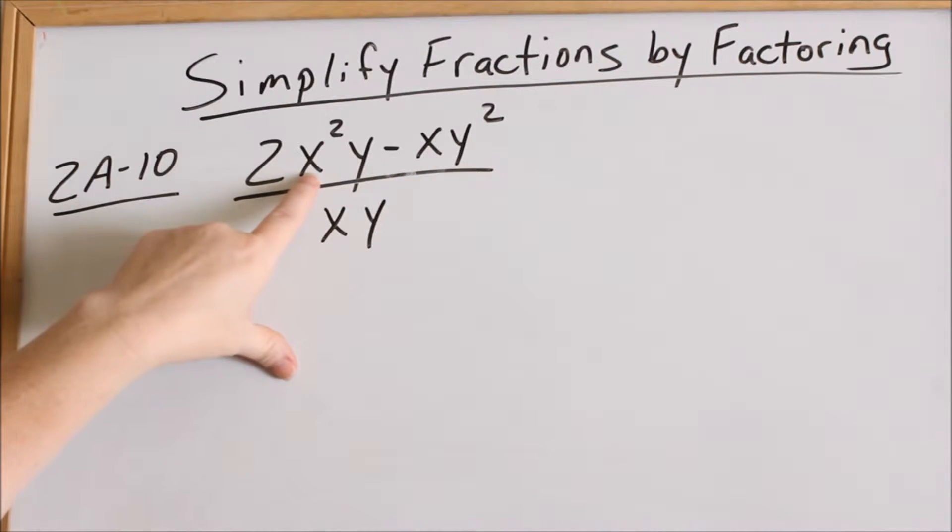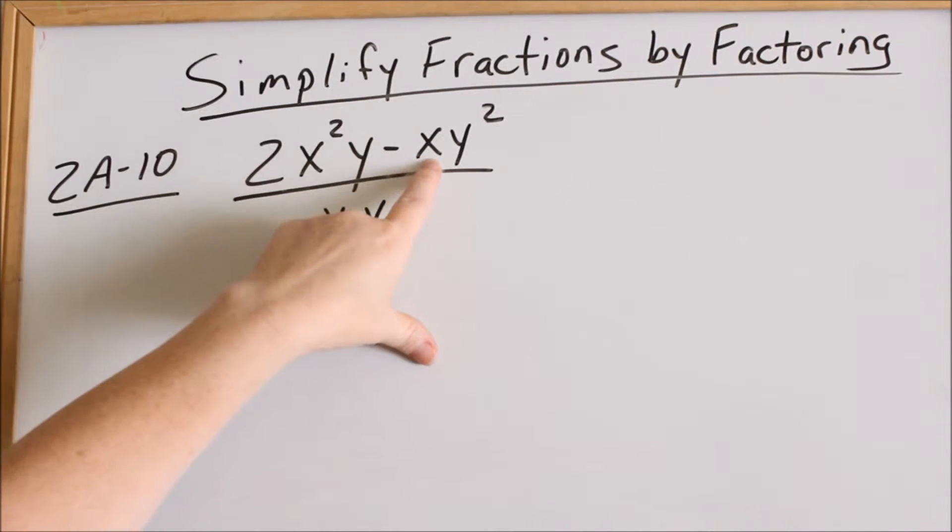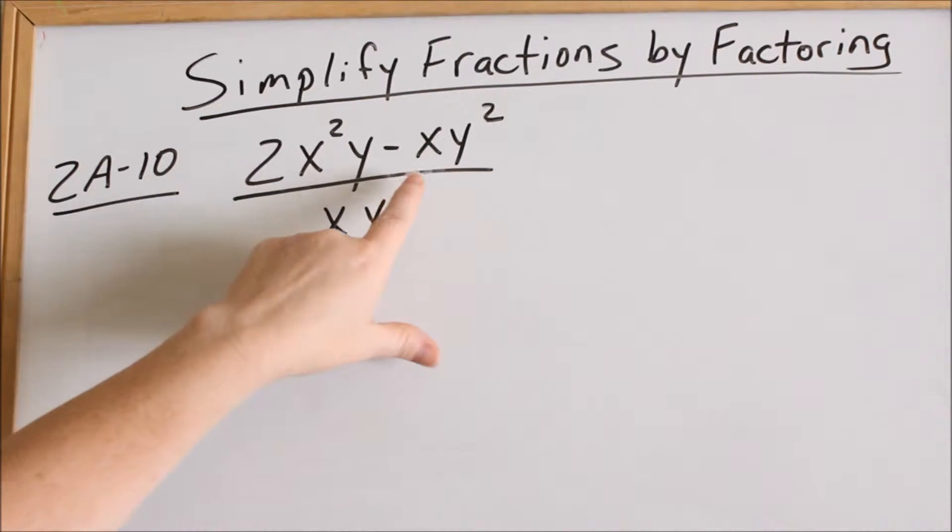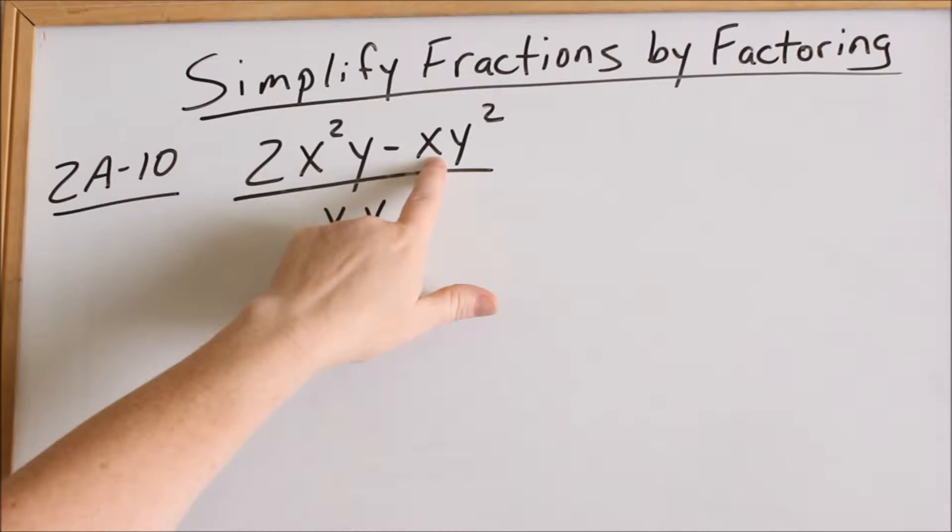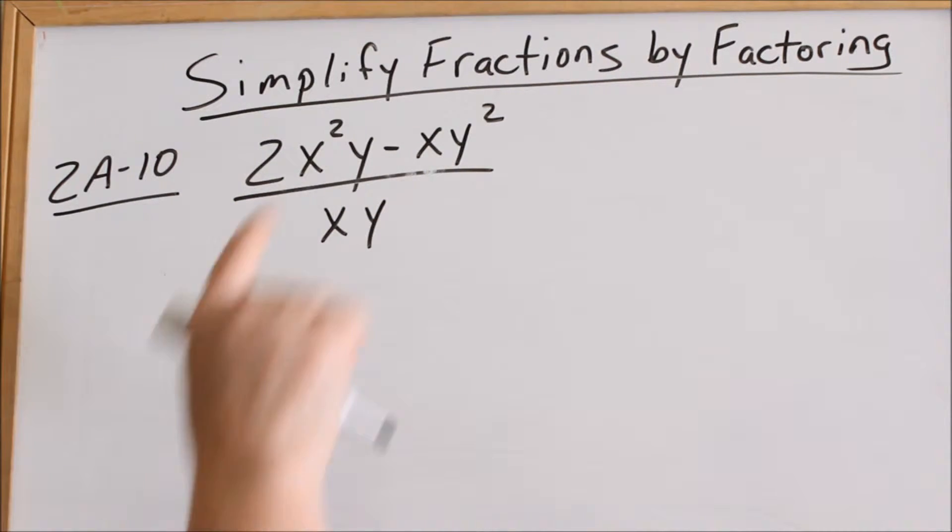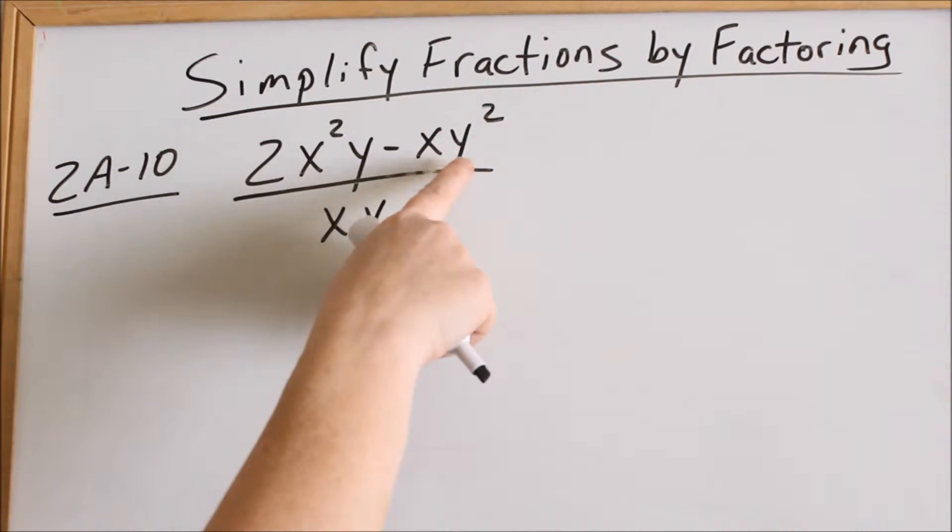Then I look at the x squares. x squared, x. What is the most I can pull out? The most you can pull out is the lowest exponent. This one has an exponent of 1, this one has an exponent of 2. So the most that I can divide out is an x from here and an x from here. I cannot divide out an x squared. Now, looking at your y's, the most y's you can pull out is a y here, and you can pull out a y from there.